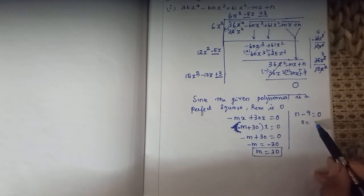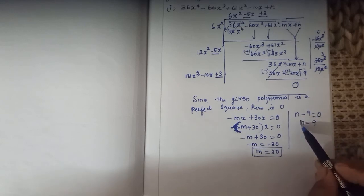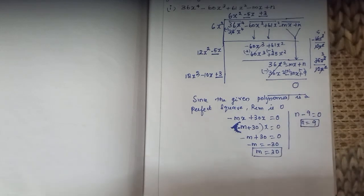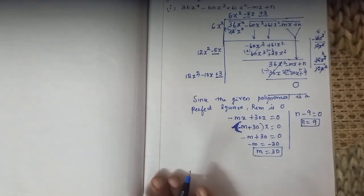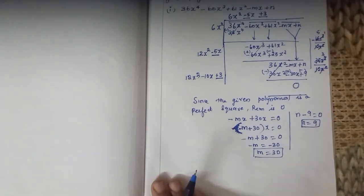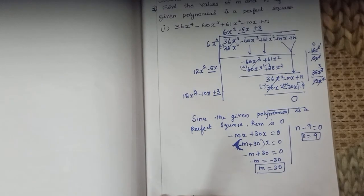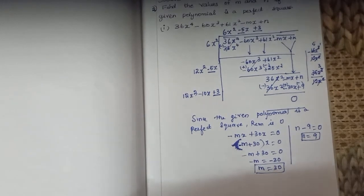The constant term gives n equals 9. So we have found the values of m and n. Thank you for watching my channel. Please subscribe. Thank you, students.